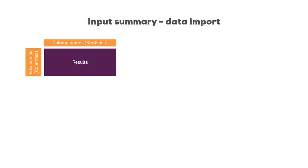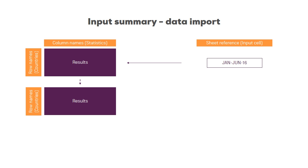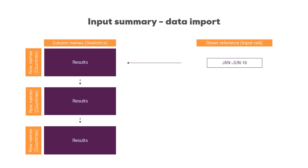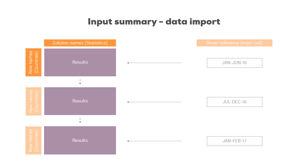We'll also add the sheet reference as an input cell, so we can define the period from which data is retrieved. In total we want to define the country, the statistic, and the period. Once the table is built, we copy it twice — once for each of the three periods — and adjust the sheet reference to July–December 16 and January–February 17 respectively. Let's start with the row and column names.